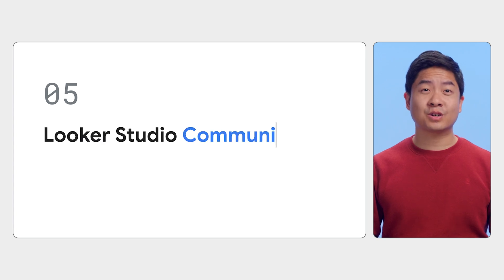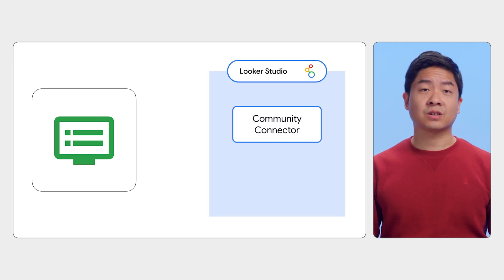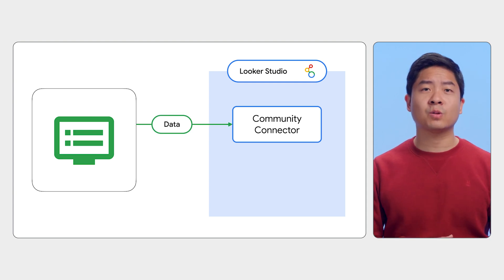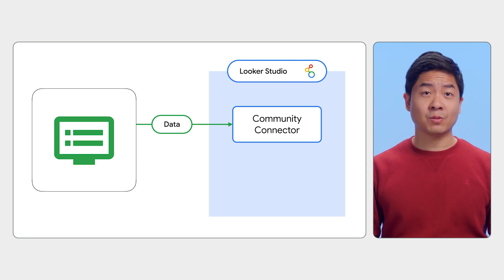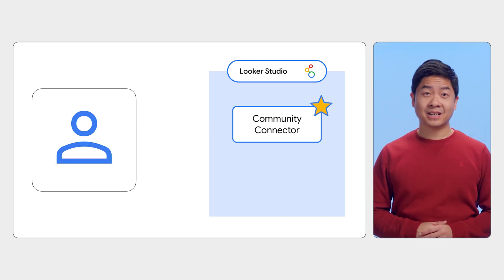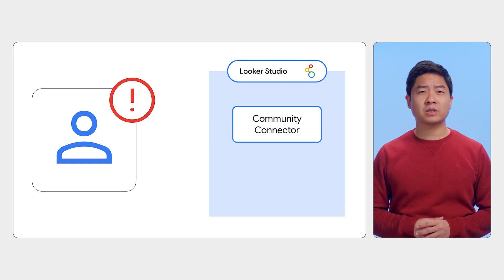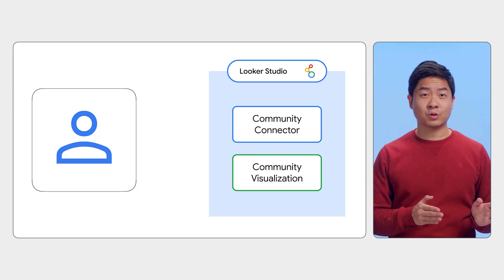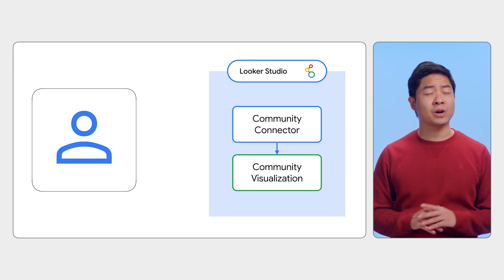Lastly, what are Looker Studio community connectors and visualizations? Let's go back to the problem at the beginning of this video. You have a new marketing tool and you need to visualize the tool's marketing data inside a Looker Studio report. First, you can create a Looker Studio community connector to connect and model the new marketing data source into a format Looker Studio can understand. You can make use of existing ones in our marketplace or build your own community connector with Apps Script. Now you have your marketing data inside Looker Studio. However, if your stakeholders want to visualize the data in a unique way, you can build your own Looker Studio community visualization and add it to your reports to display your data in whatever way you want.